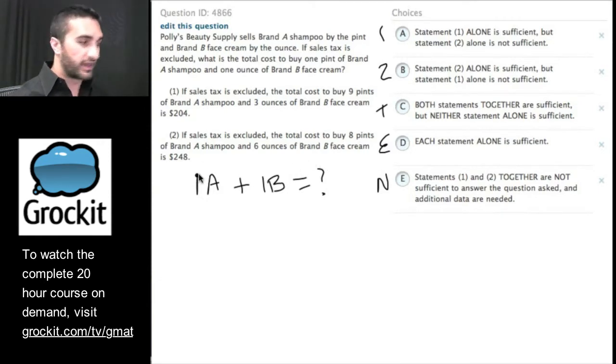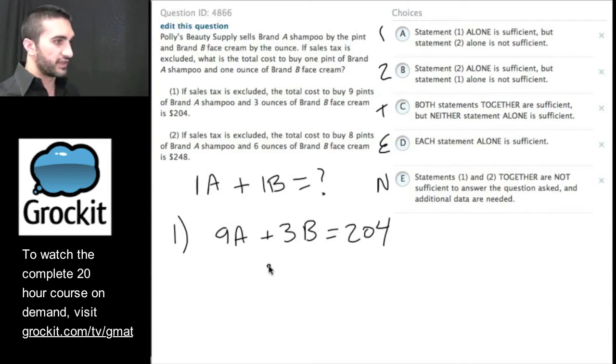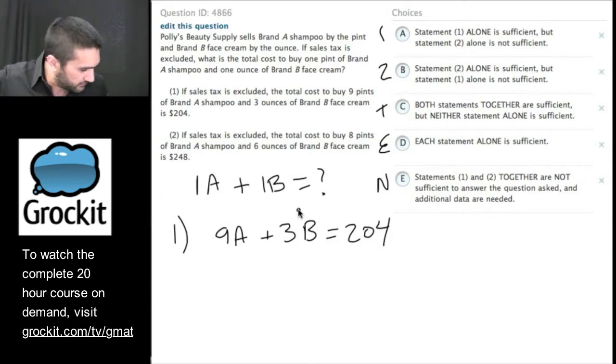Great, so let's go ahead and look at statement one. Go ahead and look at statement one for yourselves real quickly. So let's translate this, and everyone go ahead and translate it in the Facebook embed after you've done it on your scratch pad because you should be following along in class with a scratch pad or a notebook that you can copy everything we're doing here so that you get that muscle memory of doing this. It's very important to have that muscle memory. If sales tax is excluded, the total cost to buy nine pints of brand A plus three ounces of B is $204. So if we know this, is this enough to tell us what these two cost? What do you think Jake, is this enough?